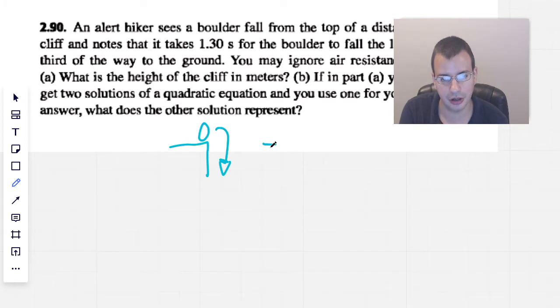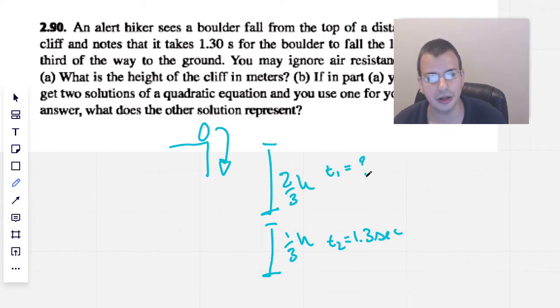So here is a boulder. It falls two-thirds of the height and then it falls one-third of the height. And we know that this one-third here, I'm going to call time 2, equals 1.3 seconds. This up here, time 1 equals question mark. And then we're going to assume that this is the ground.